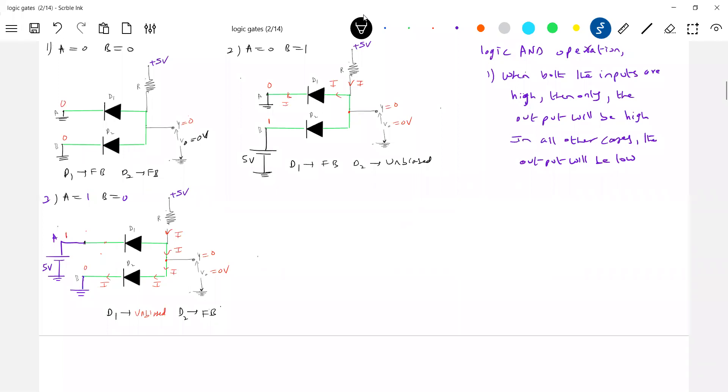Same, similar situation. So, then, what will be the output voltage? 0. So, Y will be 0. Output will be 0. So, for any one input is low, the output will be low. So, okay, the last case.